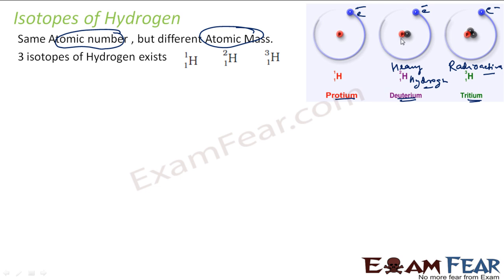It has one neutron, one proton, one electron. And then we have tritium - it has two neutrons, one proton, and one electron. So the proton and electron count is the same, only the neutron count is increasing.